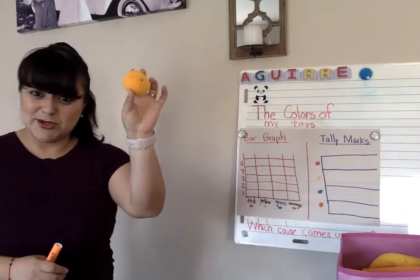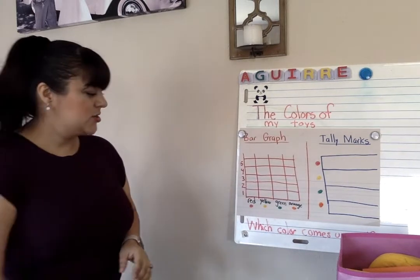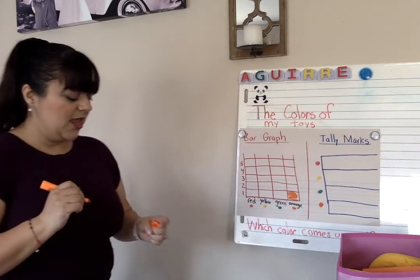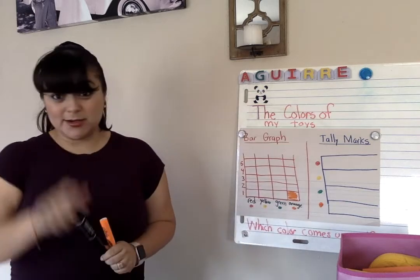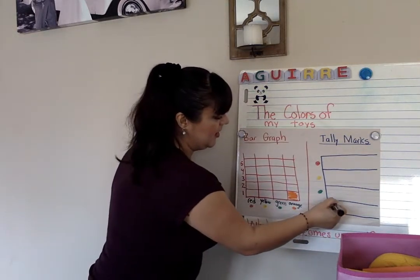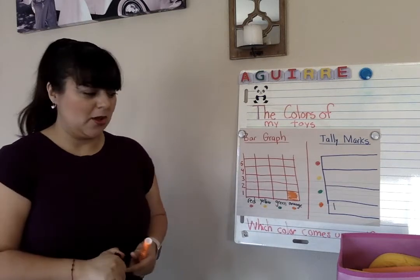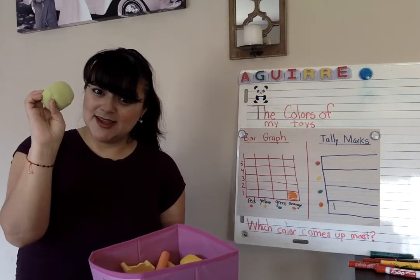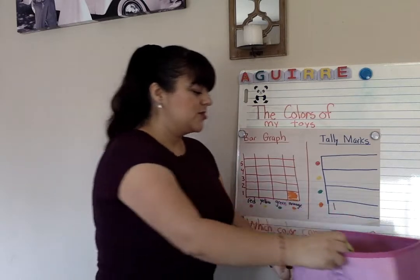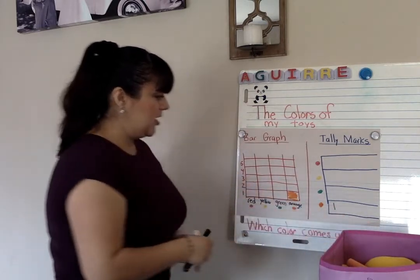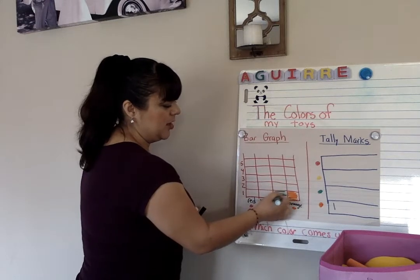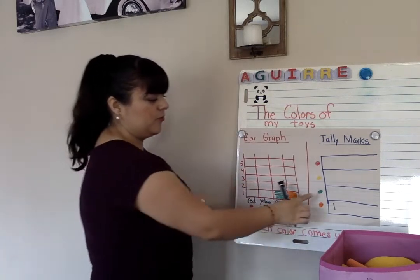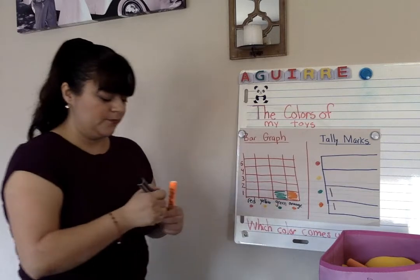Okay, first toy — what color is that? Orange! So I'll color one square in the orange bar graph and put one tally mark in the orange column. Let's take out another one. What color is that? Green! So now I'm going to shade in a green square — there's one green toy — and put a tally mark on the green section.